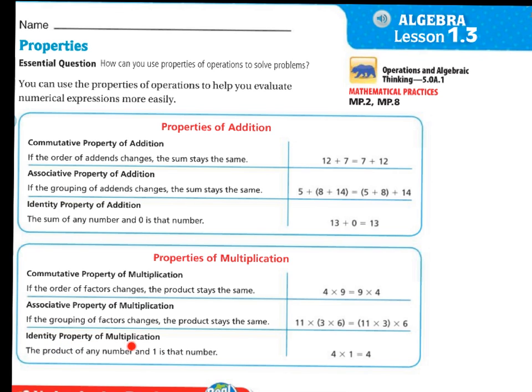The identity property of multiplication is similar to the identity property of addition in that the number becomes itself. The difference is that it's not times 0, it's times 1. So 4 times 1 is 4. A million times 1 is going to be a million.